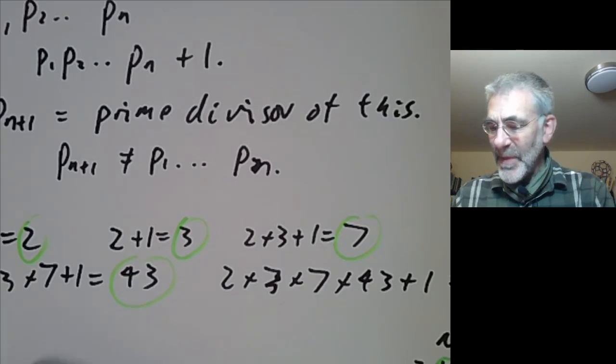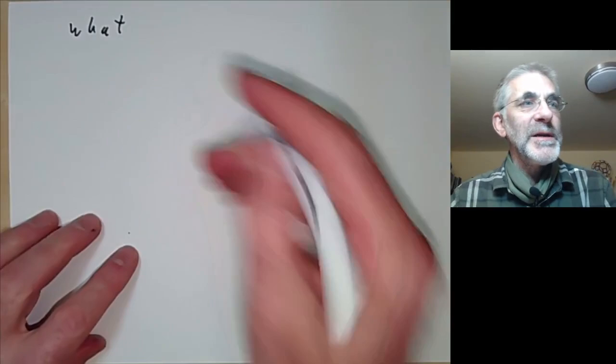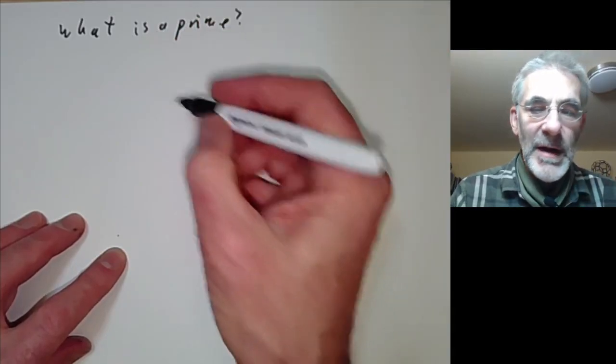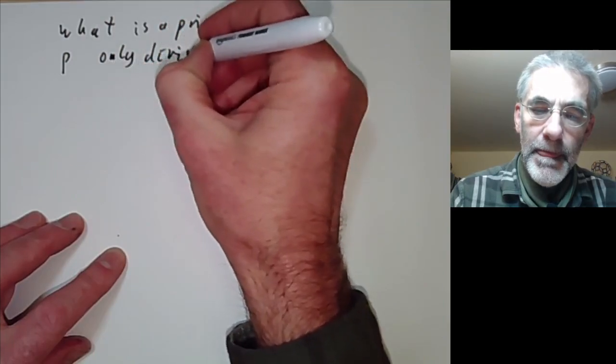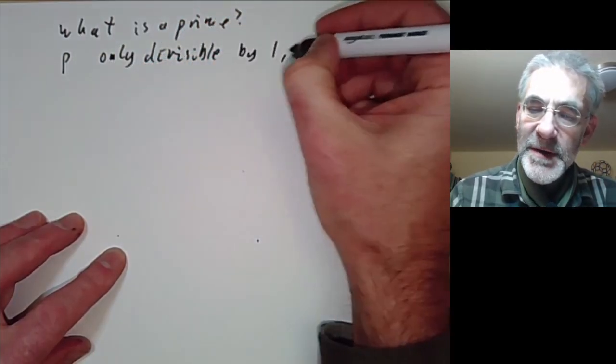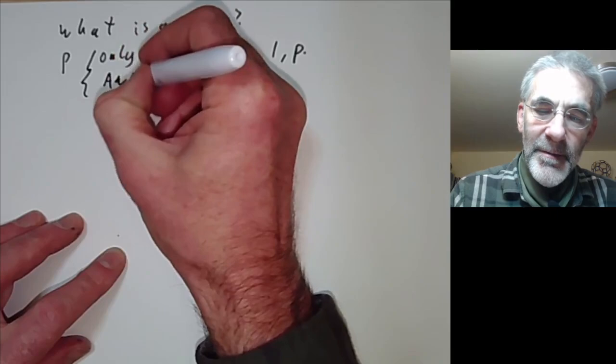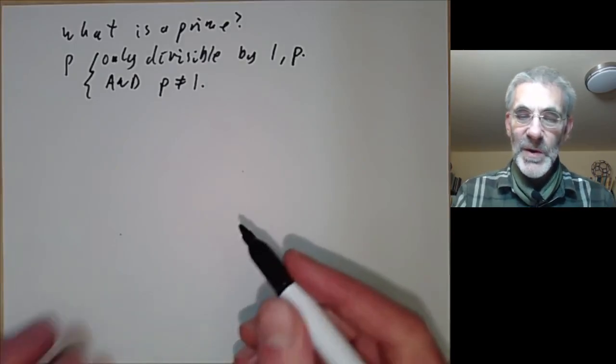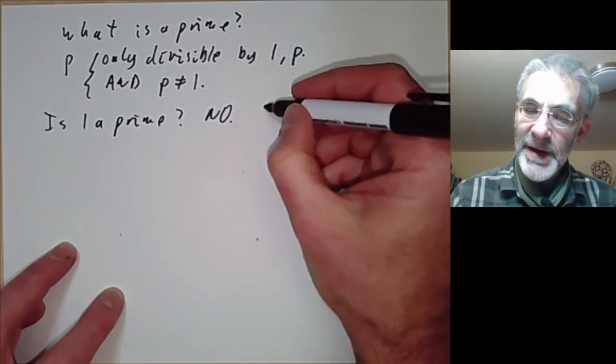So the next thing I'd better discuss a little bit is what actually is a prime. So what is a prime? Well we just recall that it's a number p that's only divisible by 1 and p, so we're talking about positive integers and p should not be equal to 1. So I'm saying 1 is not a prime by definition. So this answers the question is 1 a prime? The answer is no by definition.